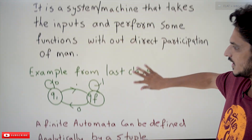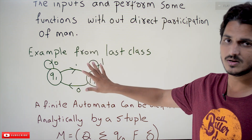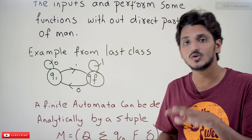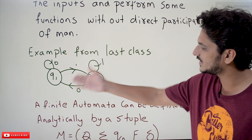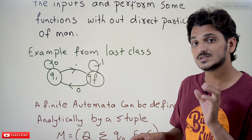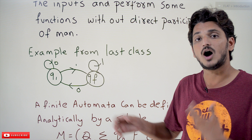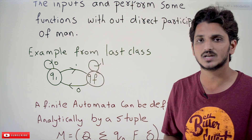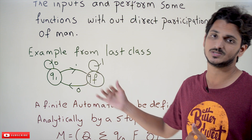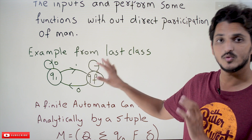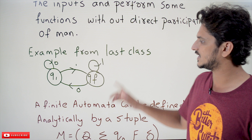Coming to the example — this is the example we discussed in our last class, and we call it finite automata. We are processing a string without the intervention of a human, that's why we call it automata. How we are processing the string was explained in our previous class. If you don't know what this diagram is or how it processes strings, please watch our previous classes and come back.